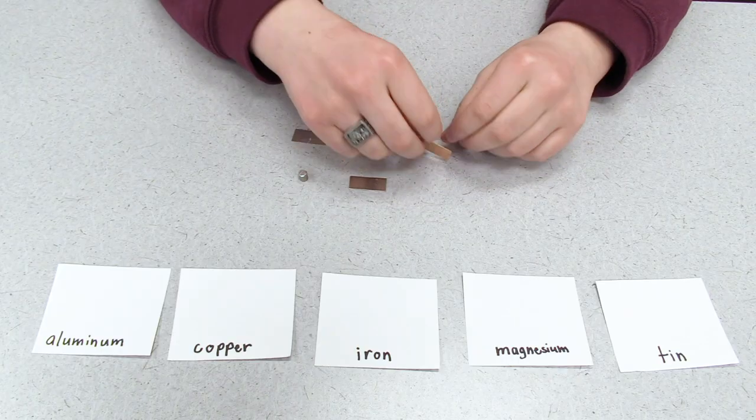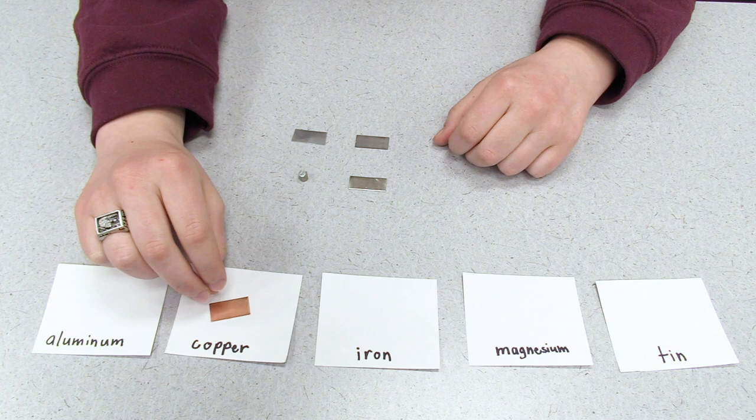First, we have five samples of metal that we would like to identify using their properties. The easiest to identify is copper by its orangish color.